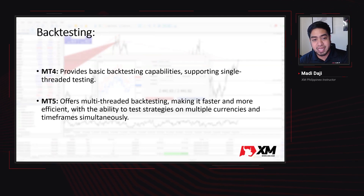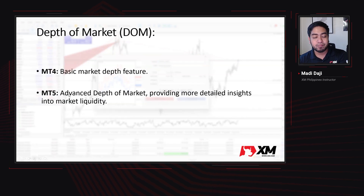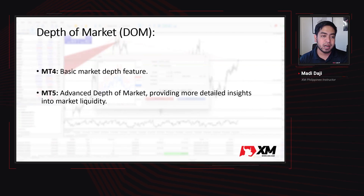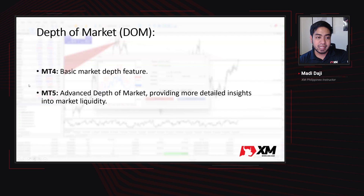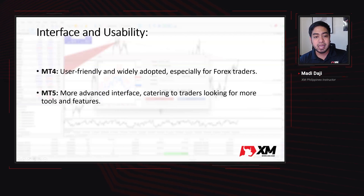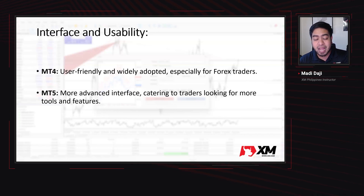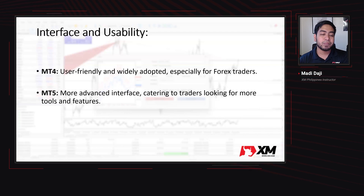When it comes to the DOM — depth of market — MT4 has the basic version, while MT5 has an advanced depth of market, providing more detailed insights into market liquidity. For interface and usability, MT4 is user-friendly and widely adopted, especially for forex traders. While MT5 is more advanced, catering for traders looking for more tools and features.